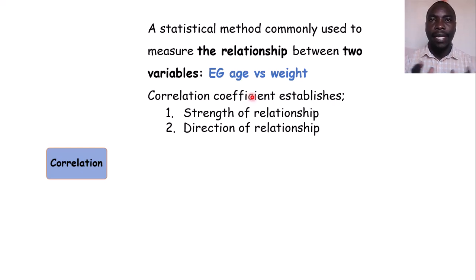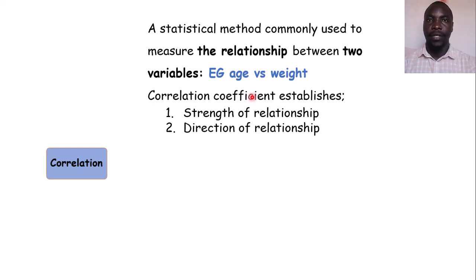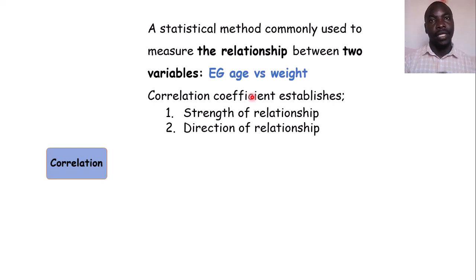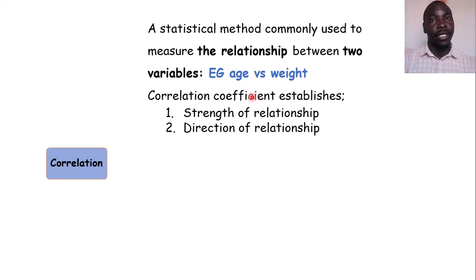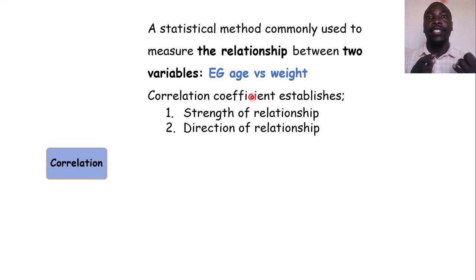In correlation analysis, we obtain a correlation coefficient as a measure of association. This correlation coefficient establishes two things: the strength of a relationship and the direction of a relationship. Correlation generally is used for establishing a relationship, and the correlation coefficient helps us determine both its strength and direction.